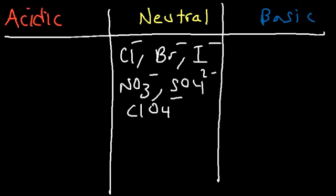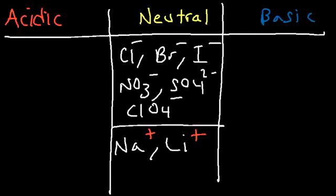Let's start with the neutral ions. The conjugate bases of strong acids are neutral, so like chloride, bromide, iodide, nitrate, sulfate, perchlorate. These are neutral ions. Now alkali metals are also neutral as well.